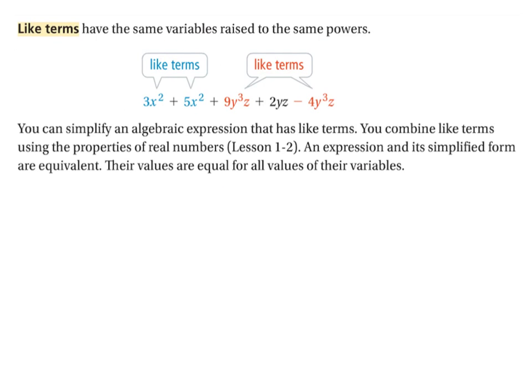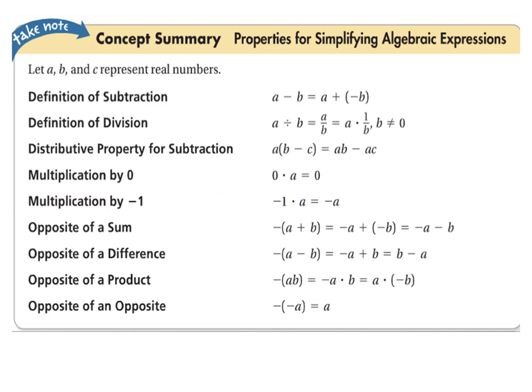When we have like terms, we can combine them. So in this case we've got the 3x squared and the 5x squared, well that would be 8x squared. And we've got 9y cubed z and 4y cubed z, of course subtracting the 4 gives us 5y cubed z. And then we have a plus 2y cubed z. When you combine like terms, you just add or subtract their coefficients as given by the operations that we have. Here's just a list of properties for simplifying algebraic expressions.